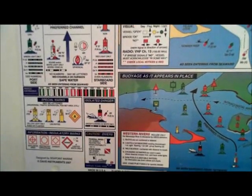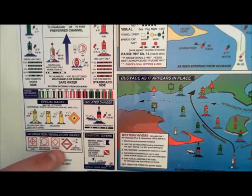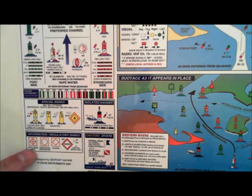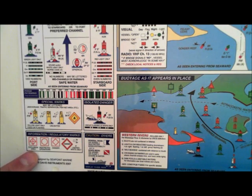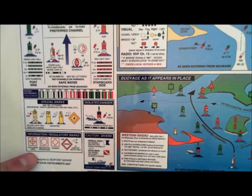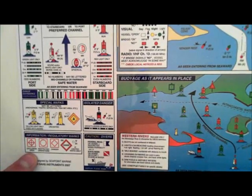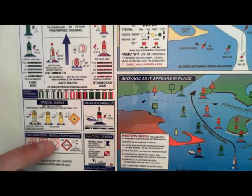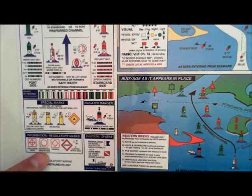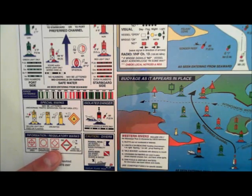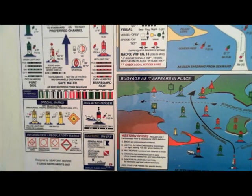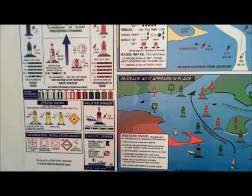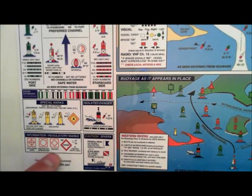Exclusion areas and regulatory marks: these include slow no-wake zones and swim areas. There's a speed limit sign example. An exclusion area means don't come boating here — for example, a swim area. Restricted operations marks will say something like no wake or give a speed limit within that circle. These are all orange and white. A diamond shape in the middle means danger — maybe there's a rock, log, bar, or shoal.